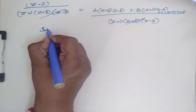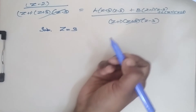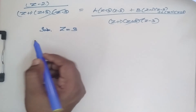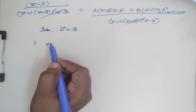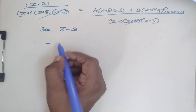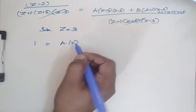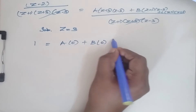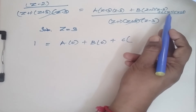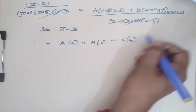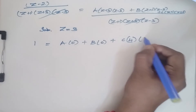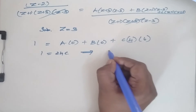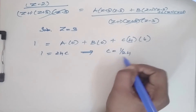Substitute z = 3 to find C. When z = 3, the numerator gives 3 − 2 = 1. The A and B terms vanish. So 1 = C·(3+1)·(3+3) = C·4·6 = 24C. Therefore C = 1/24.